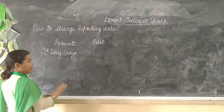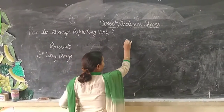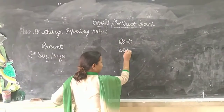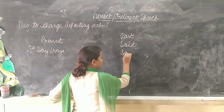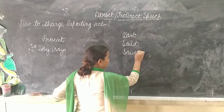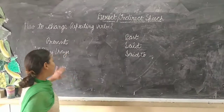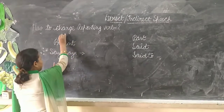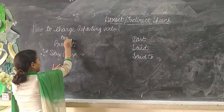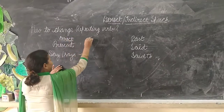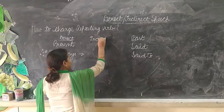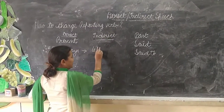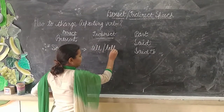If the reporting verb is in past, it will be 'said' or 'said to'. When 'say' or 'says' is used in direct speech, in indirect speech we will change it to 'tell' or 'told'.